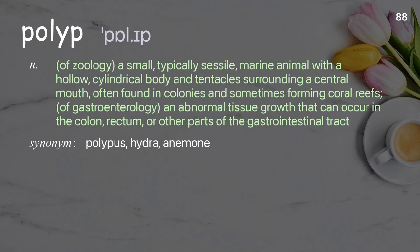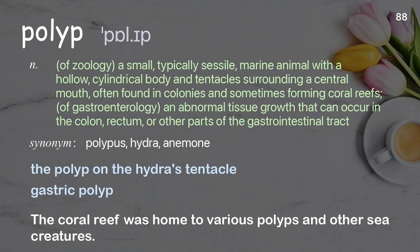Polyp: in zoology, a small, typically sessile, marine animal with a hollow, cylindrical body and tentacles surrounding a central mouth, often found in colonies and sometimes forming coral reefs. In gastroenterology, an abnormal tissue growth that can occur in the colon, rectum, or other parts of the gastrointestinal tract. Examples: the polyp on the hydrous tentacle, gastric polyp. The coral reef was home to various polyps and other sea creatures.